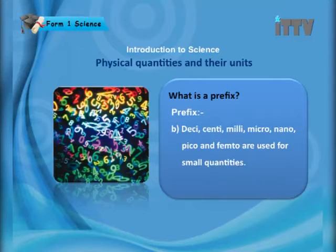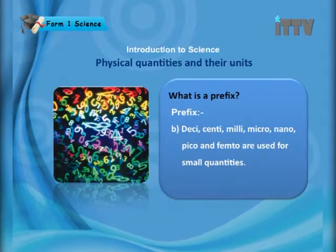For small quantities, the prefixes are: desi, centi, milli, micro, nano, pico, and femto. You must be able to recognize which prefixes represent big quantities and which represent small quantities, and know the exact value of each prefix.